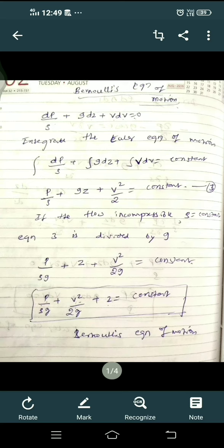This should be taken as equation number 3, as this is the continuation of Euler's equation of motion. This equation number 3 can be divided by g: p/(ρg) + z + v²/(2g) = constant. If you rearrange these terms, we'll get p/(ρg) + v²/(2g) + z = constant. So this is the equation for Bernoulli's.